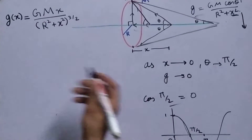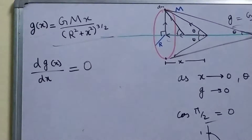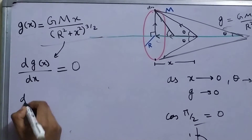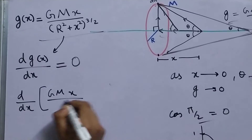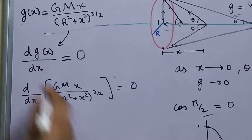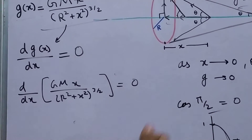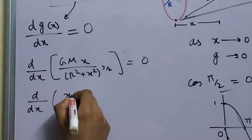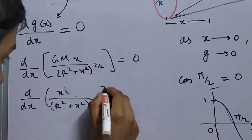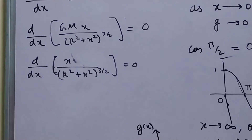We just use the standard method: we will differentiate this quantity with respect to x, then put it equal to 0. GM and r are just constants, we can pull them out of the differentiation. We are simply left with d/dx of x upon (r² + x²)^(3/2) equal to 0. Now we have one function divided by another function, so we will use the quotient rule. The quotient rule says that the derivative of f/g is g times the derivative of f, minus f times the derivative of g, all divided by g².